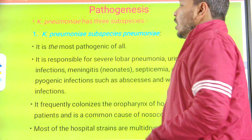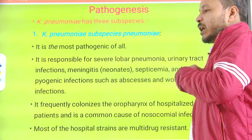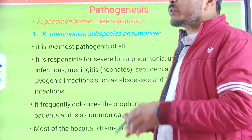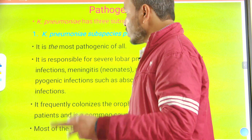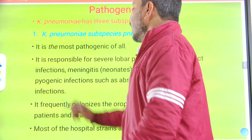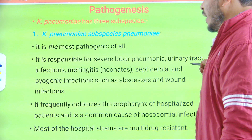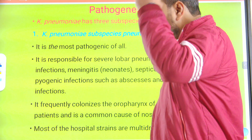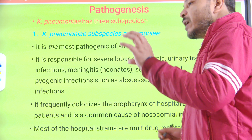In terms of pathogenesis, Klebsiella pneumoniae mainly causes pneumonia, affecting different lobes of the lung — that is why it is known for lobar pneumonia. Klebsiella pneumoniae has three subspecies. The first, subspecies pneumoniae, is the most pathogenic and is responsible for severe lobar pneumonia, urethral infections, meningitis in neonates, septicemia, and pyogenic infections such as abscesses and wound infections.